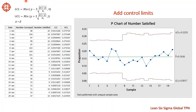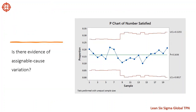Here is the formula to calculate the lower and upper control limits. Looking at the p chart for the data — do you see evidence of assignable cause variation? No points are outside the control limits and no obvious patterns are evident, so on average 16.36% of customers are satisfied with the licensing process, and the process is stable over time.